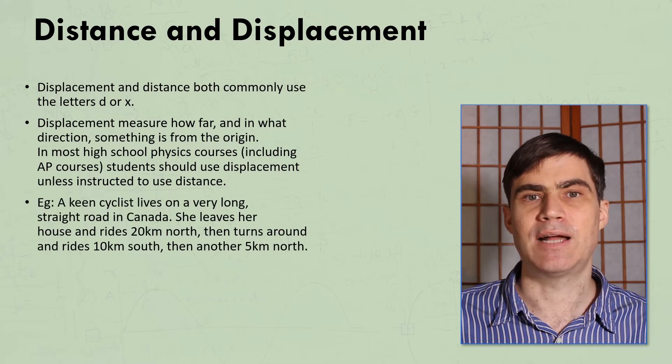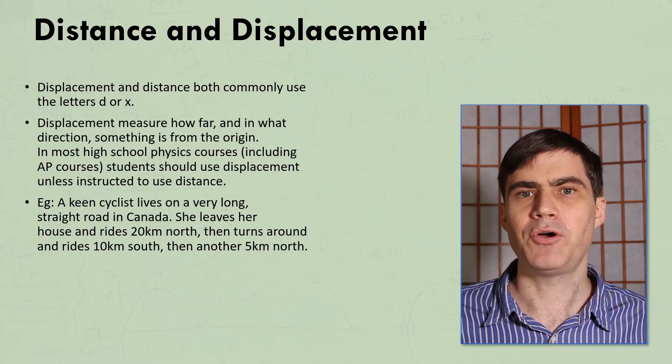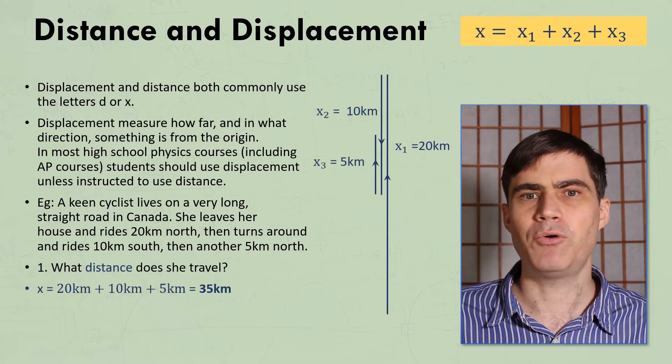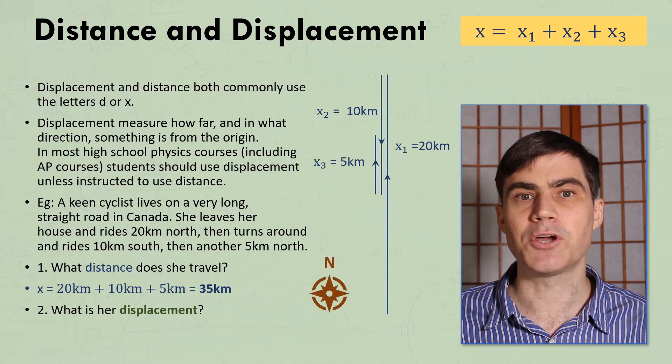A keen cyclist rides 20 km north, then 10 km south, then another 5 km north. For her distance, we just add them all up and get 35 km. But for her displacement, we need to take into account directions, and also positives and negatives.